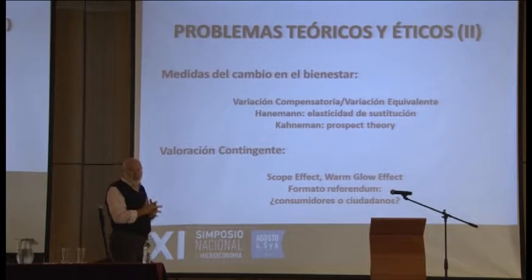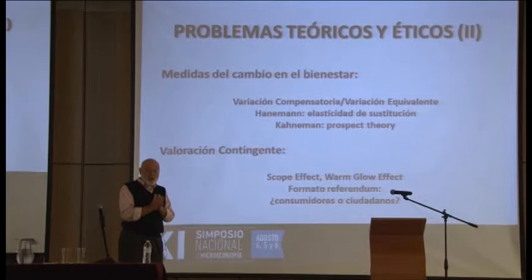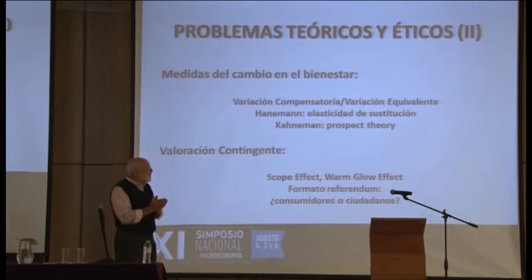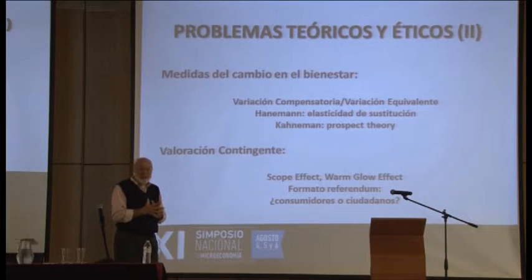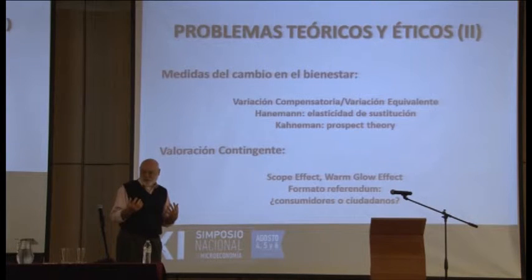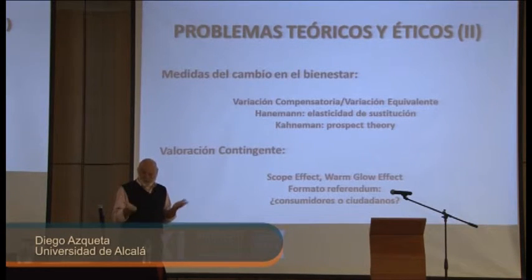Estas dos medidas hicksianas, al eliminar el efecto renta, mantienen constante la utilidad marginal del dinero — en un caso la original y en el otro la final. Todo esto está muy bien hasta que la evidencia empírica muestra que, aunque la teoría dice que deberían ser muy parecidas — Willis tiene un artículo donde dice que deberían diferir en un 10-12% — resulta que difieren en varios órdenes de magnitud. Esto presenta un problema serio: ¿cuál escojo para saber cómo ha sido el cambio del bienestar? Si escojo una me da una pérdida de bienestar de 10, si escojo la otra me da 100, y la decisión final depende de cuál escoja.